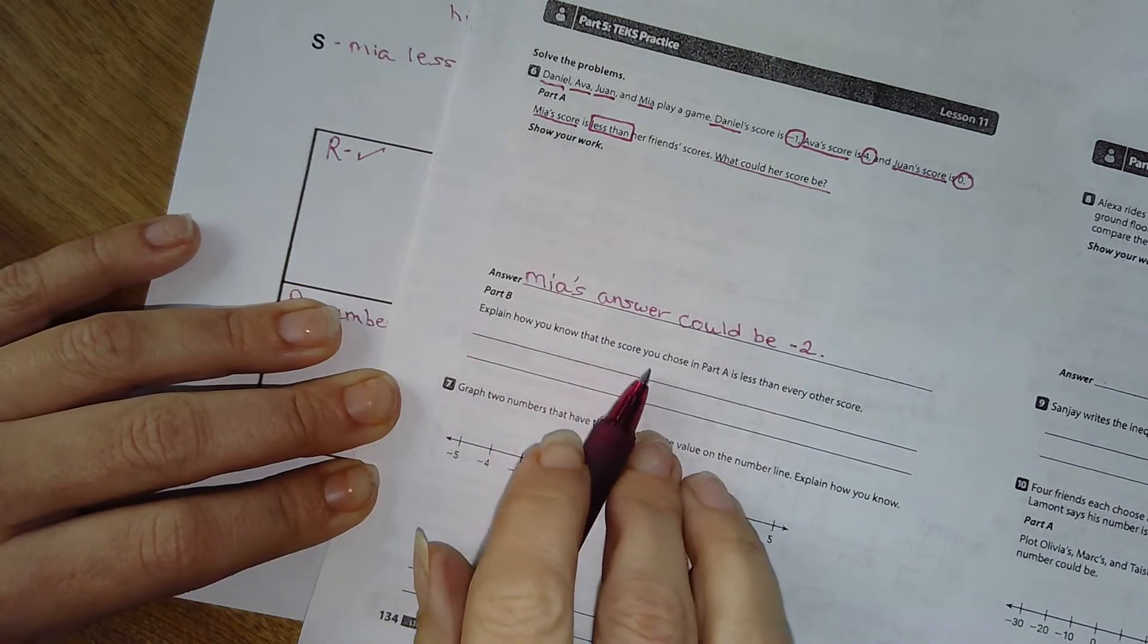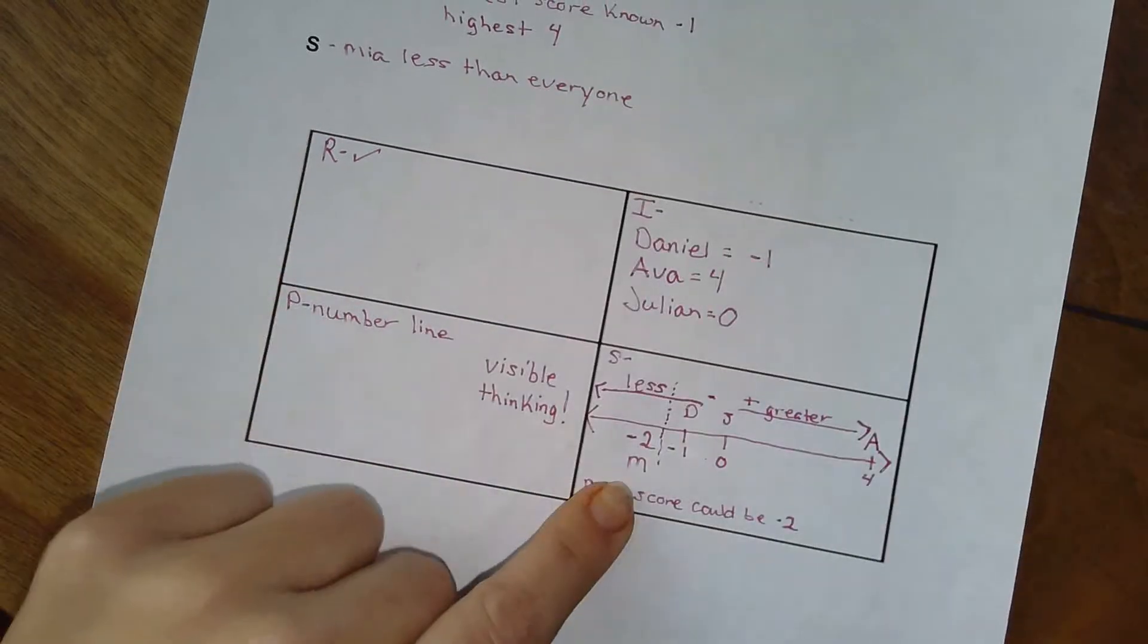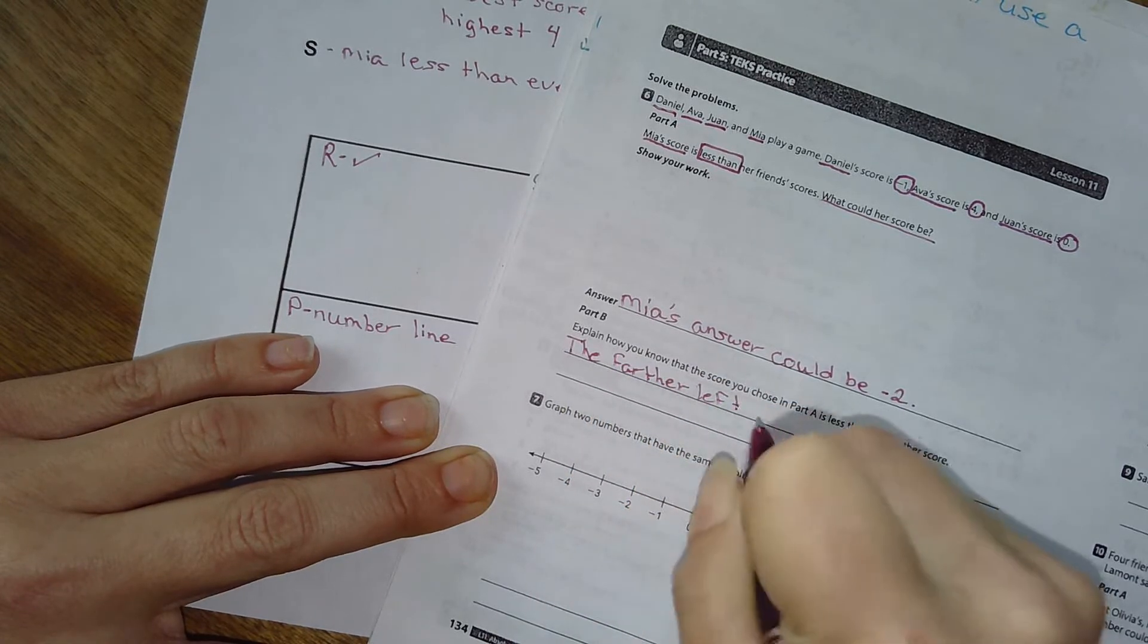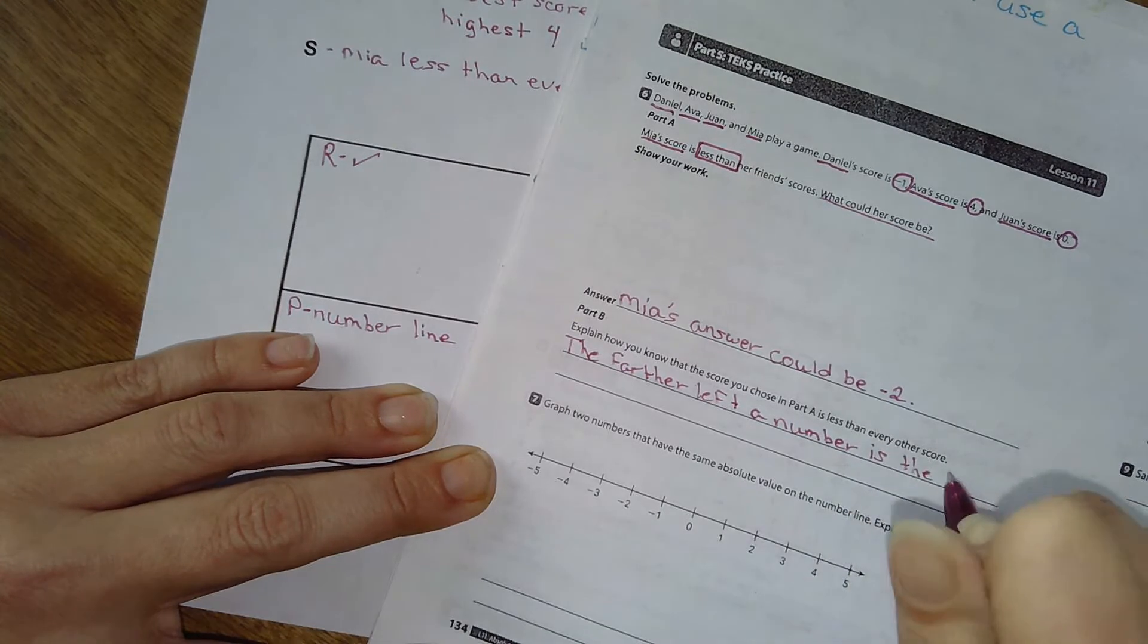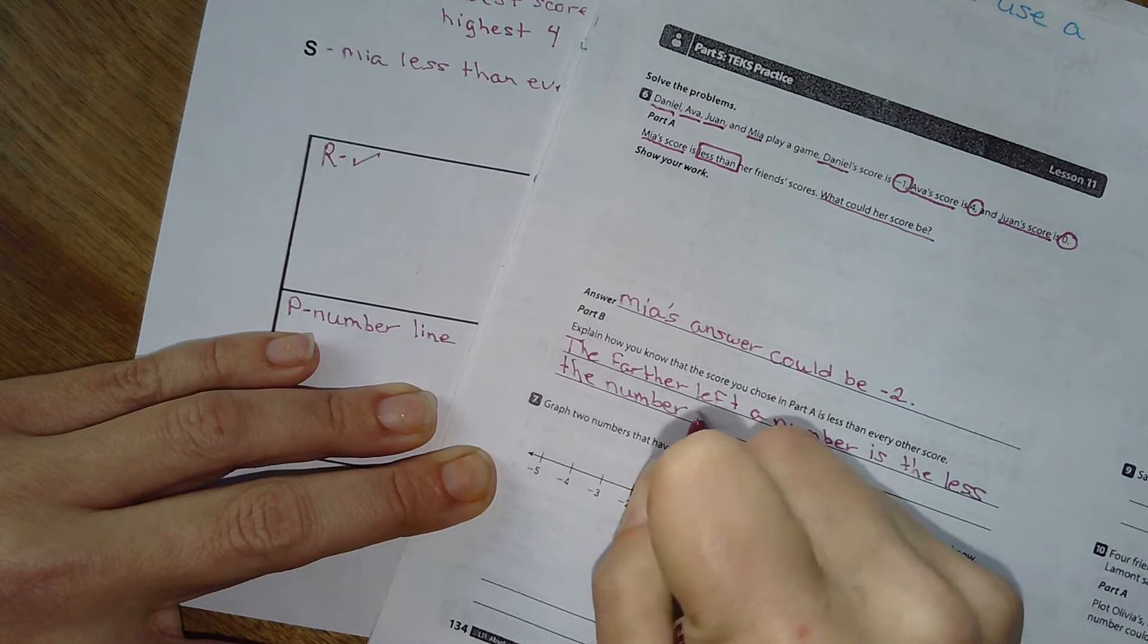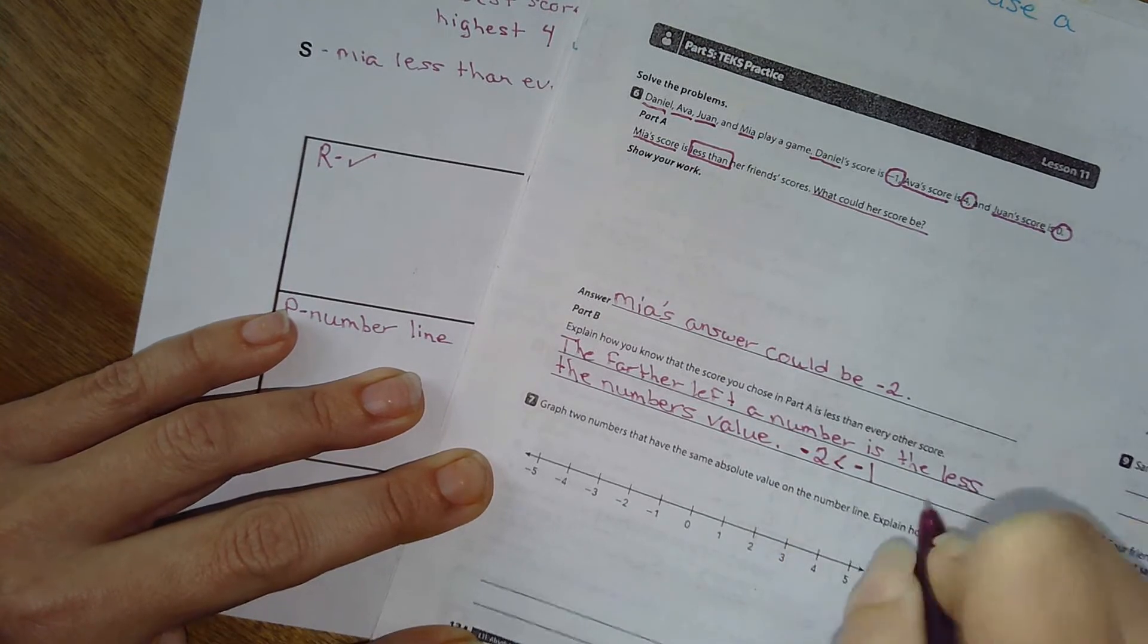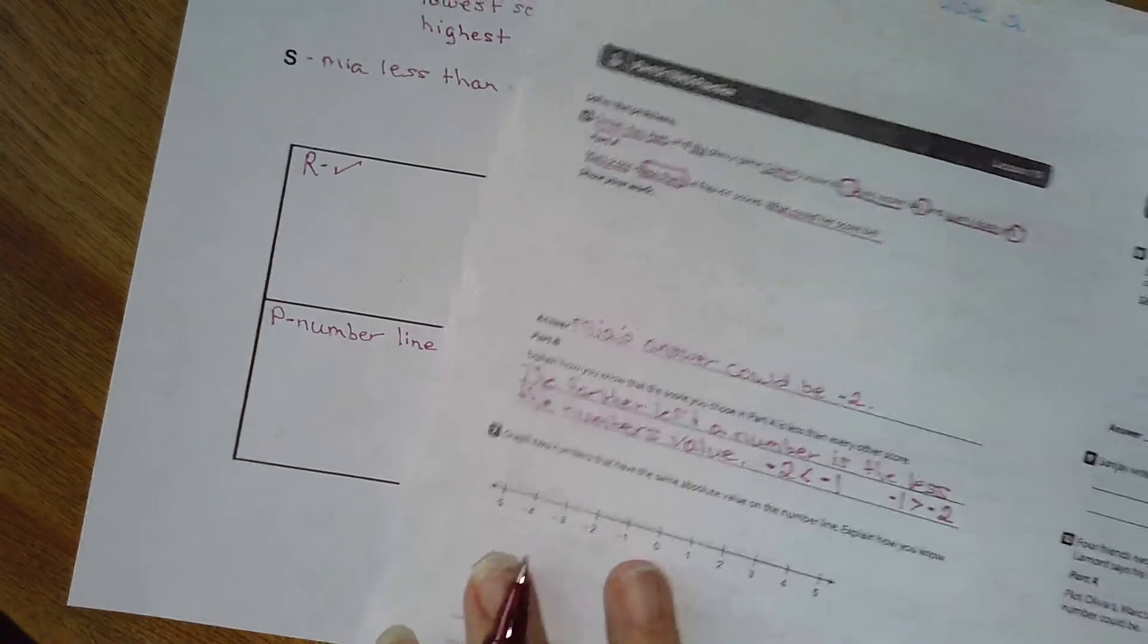Explain how you know that the score you chose in part a, right? This is part a is less than every other score. Well, all I have to do is look at my number line, right? The farther left a number is, oops, I'm sorry. She's having a meltdown. A number is the less the number's value. Negative two is less than negative one. And negative one is greater than negative two. And that is number six.